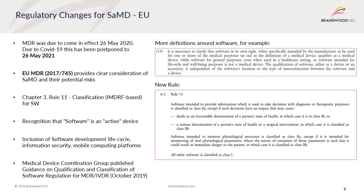The MDR also introduced Rule 11 to classify software as a medical device based on the IMDRF risk classifications and how the information the software provides is used for decisions in relation to diagnosis and therapeutic purposes. Most software previously classed as Class 1 under the MDD are likely to be up-classified to Class 2A or higher. Additional changes include recognition that software is an active device, inclusion of requirements around software development lifecycle, information security, mobile computing platforms, special labelling requirements, specific risk management considerations, and application of UDI for software including for software changes.